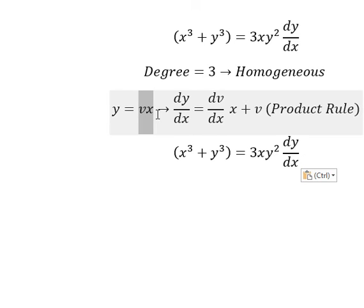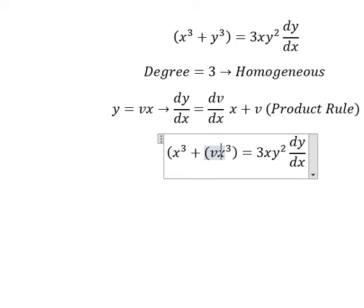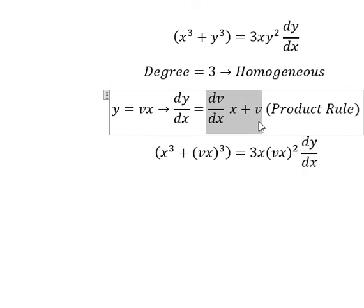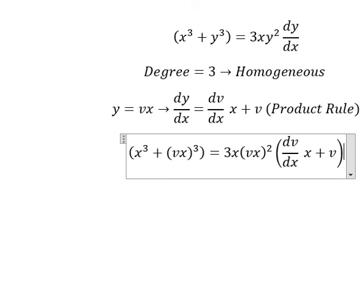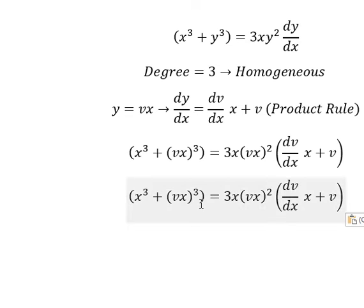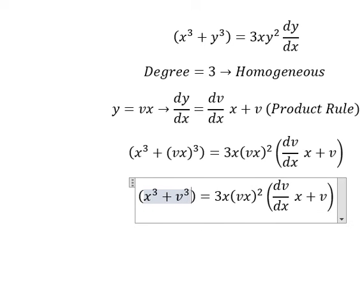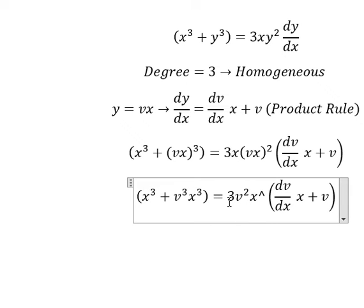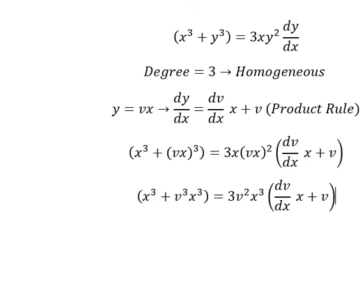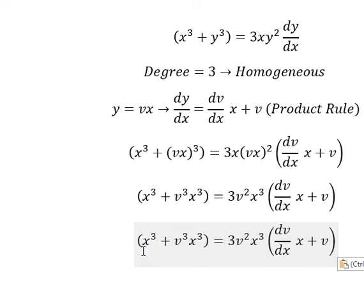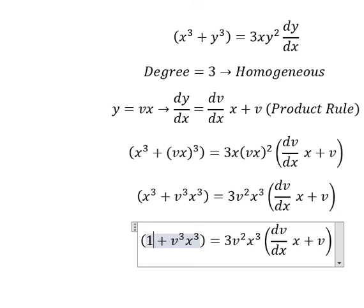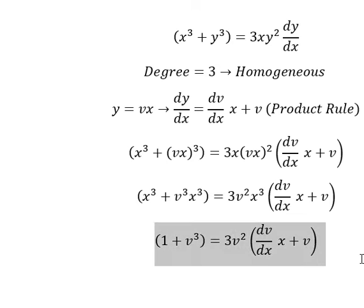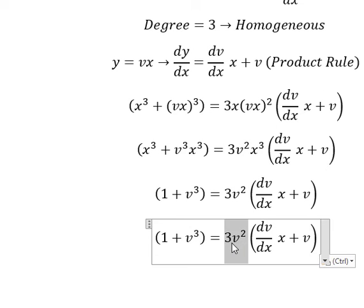I will substitute this in to change for y. We change y by vx. So we have v to the power of three, x to the power of three, and v squared x to the power of three. Now we simplify x to the power of three from both sides.